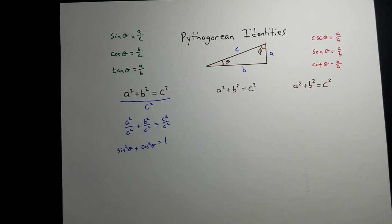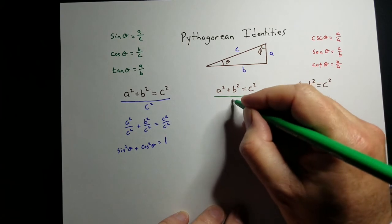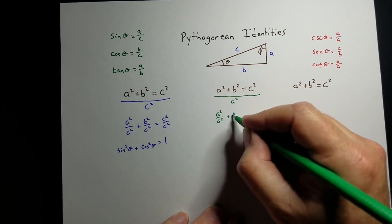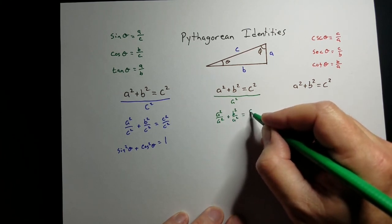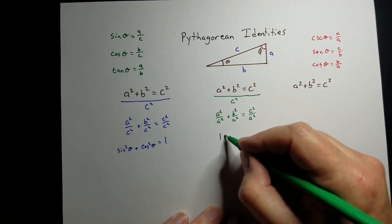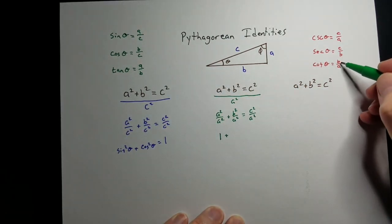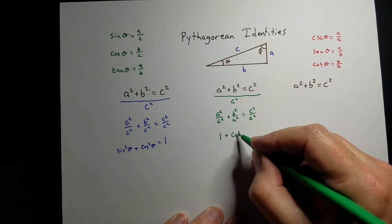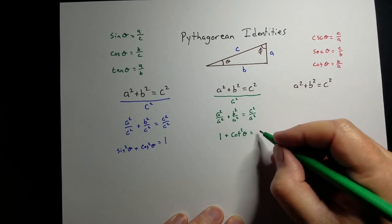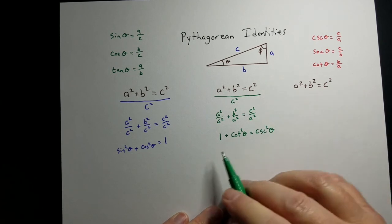If we take the other one, let's say instead of C, let's divide it by A squared. So we get A squared over A squared plus B squared over A squared equals C squared over A squared. That's 1. B over A, that's cotangent. So that's cotangent squared theta equals C over A, that's cosecant, cosecant squared theta. There's the other one.